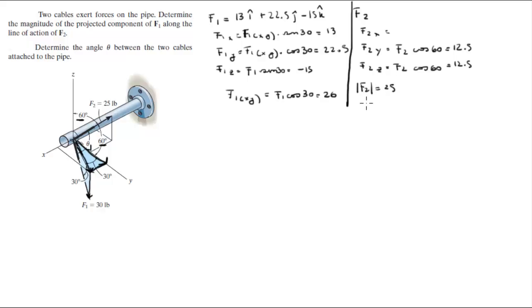Which means by Pythagorean theorem we can actually find the last remaining force. We know that F2 of X squared plus F2 of Y squared plus F2 of Z squared is equal to F2 squared. This is 25, Y is 12.5, this is 12.5, and this is what we're looking for. When you solve for F2 of X, you're going to get that it's equal to negative 17.7. It's 17.7 but it's negative because you can see it's going on the negative X direction.